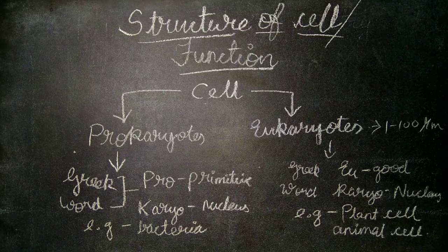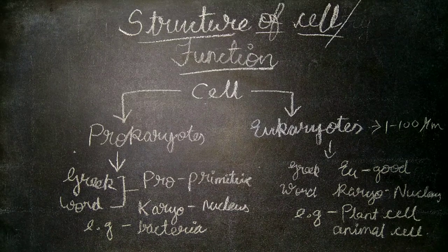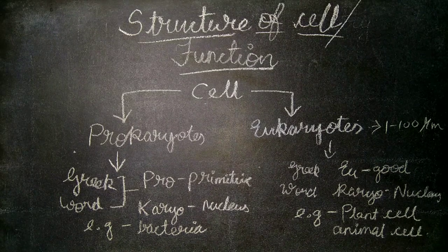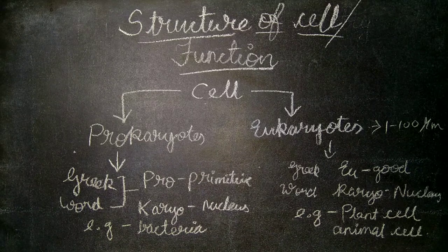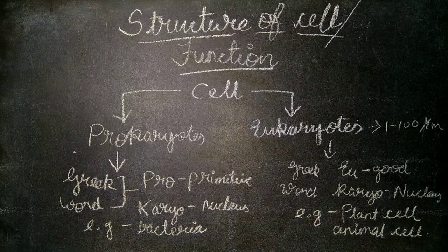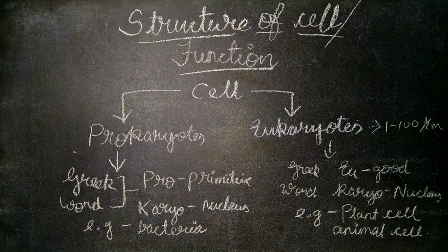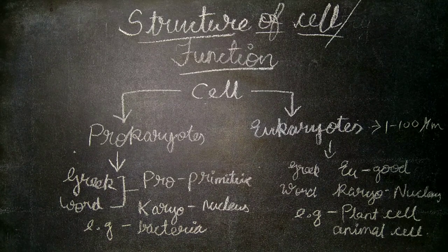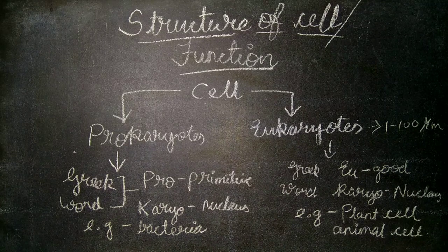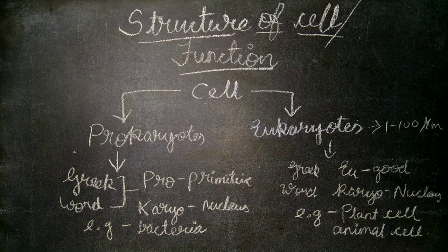In eukaryotes, the nucleus is present with a well-defined cell membrane. These cells usually range in size from 1 to 100 micrometers in diameter and have volumes a thousand to a million times that of typical prokaryotic cells.